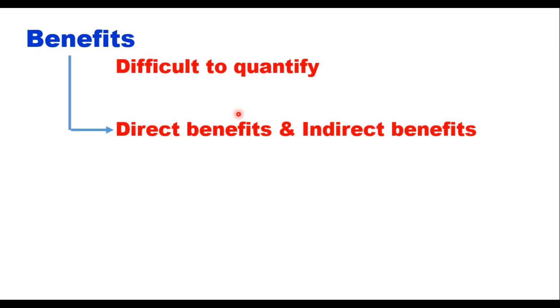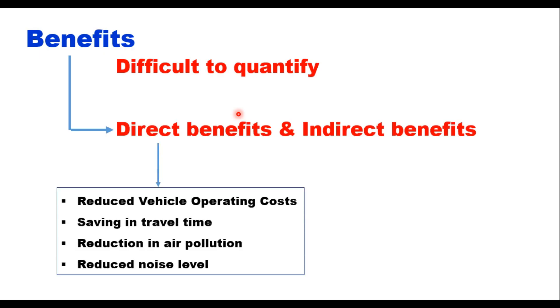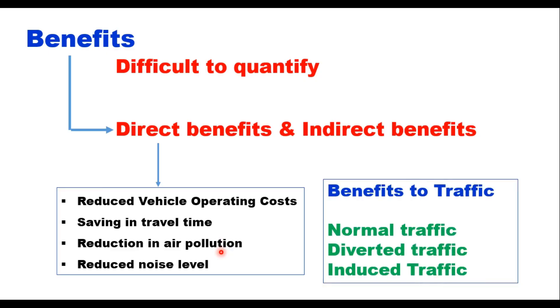Benefits accruing from a highway construction project are generally difficult to quantify because they are varied in nature — some are direct and some are indirect. Benefits include reduced vehicle operating cost, saving in travel time, reduction in air pollution, and reduced noise levels. Vehicle operating cost is relatively easy to estimate, but value of passenger time saving and value of reduced air pollution or noise pollution are difficult to quantify. Three types of traffic benefit from a highway project.